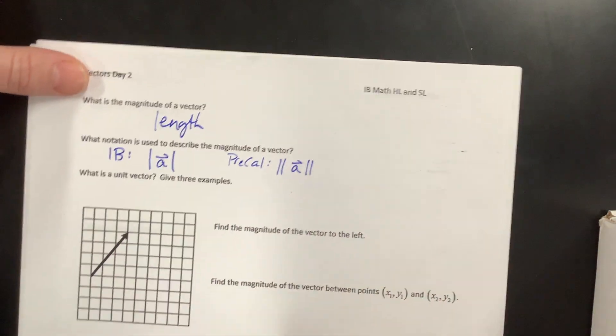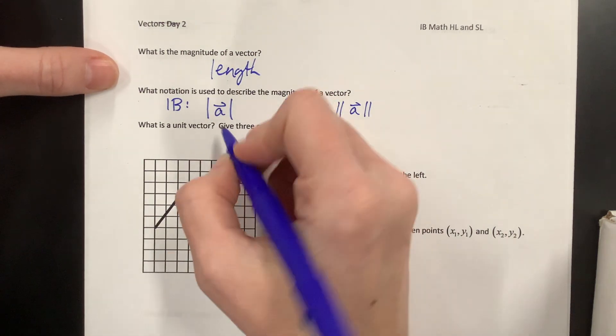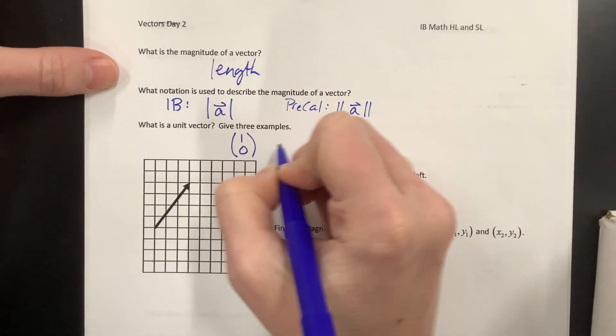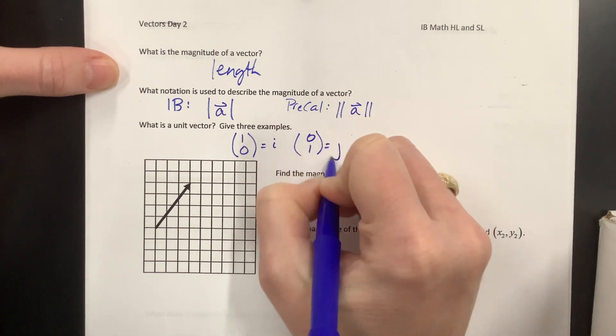So let's say, what is a unit vector? We talked about that before. It's a vector that has a magnitude of 1. And so we saw this one before, which was equal to I. We saw this one before, which was equal to J.